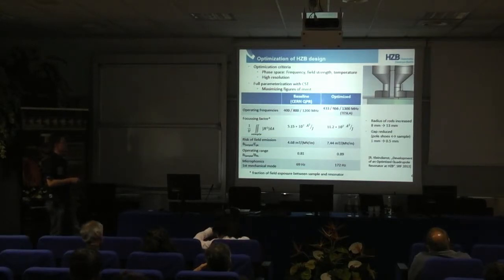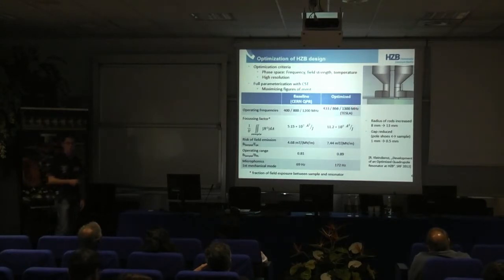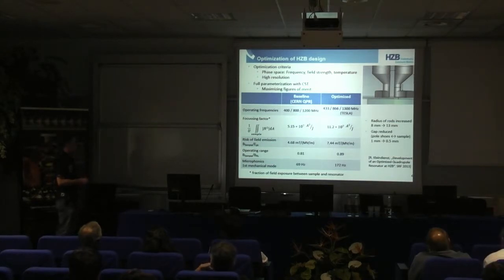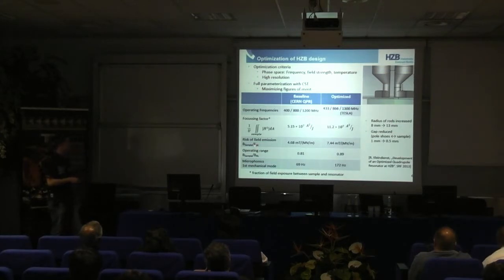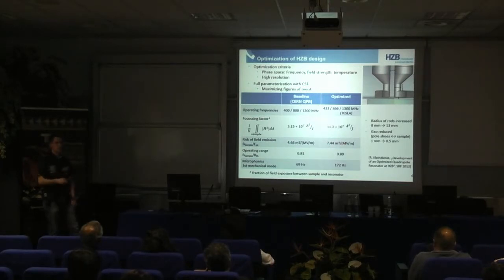We have a base frequency of 433 megahertz and can go up to 1.3 gigahertz, which is the commonly used TESLA frequency. The focusing of the magnetic fields on top of the sample has been increased, reducing the electric field at the sample. This has increased the operating range.